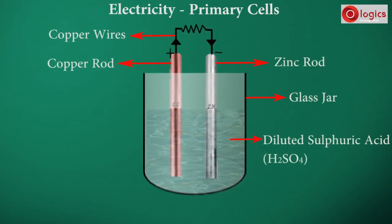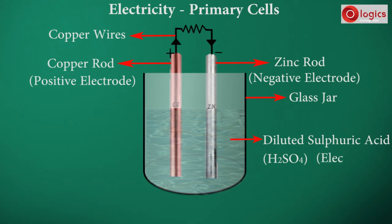Copper rod acts as positive electrode. Zinc rod acts as negative electrode. The dilute sulfuric acid is called electrolyte.